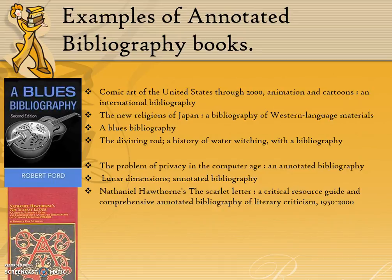There are a variety of bibliographies on almost every subject imaginable. Let's look at a few examples. The second book listed here is The New Religions of Japan, a bibliography of Western language materials. The last book listed, Nathaniel Hawthorne's Scarlet Letter, a research guide and annotated bibliography of literary criticism from 1950 to 2000.